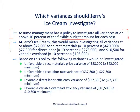Applying that work: for direct materials, we investigate all variances at or above $42,000 — that's 10% of the flexible budget of $420,000, either favorable or unfavorable. For direct labor, 10% of the flexible budget of $273,000 gives us a threshold of $27,300. For variable manufacturing overhead, 10% of the flexible budget of $105,000 means we look at all variances at or above $10,500.